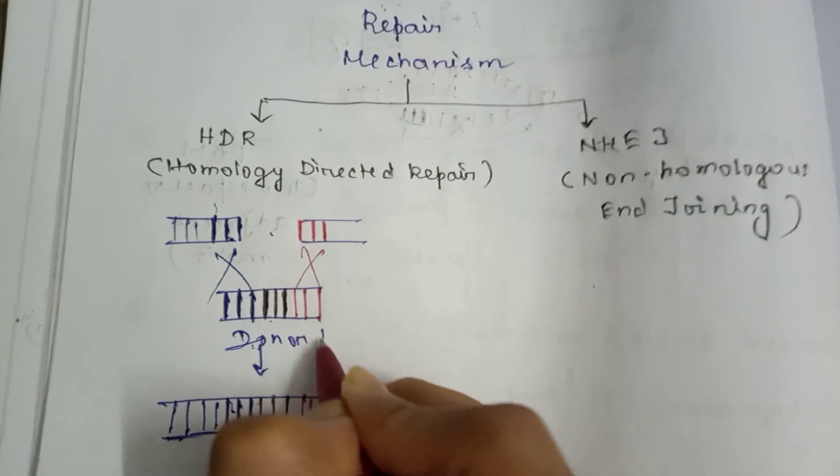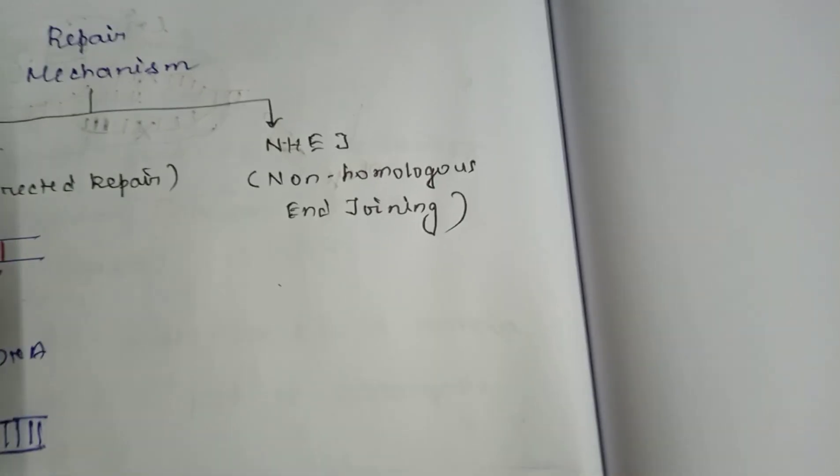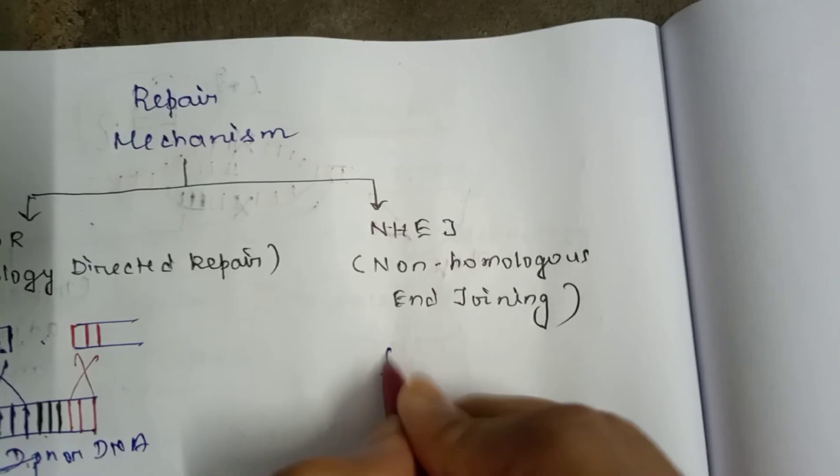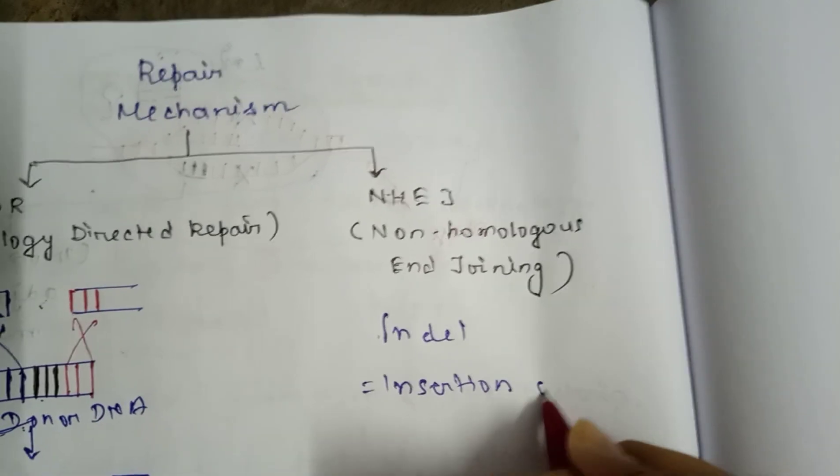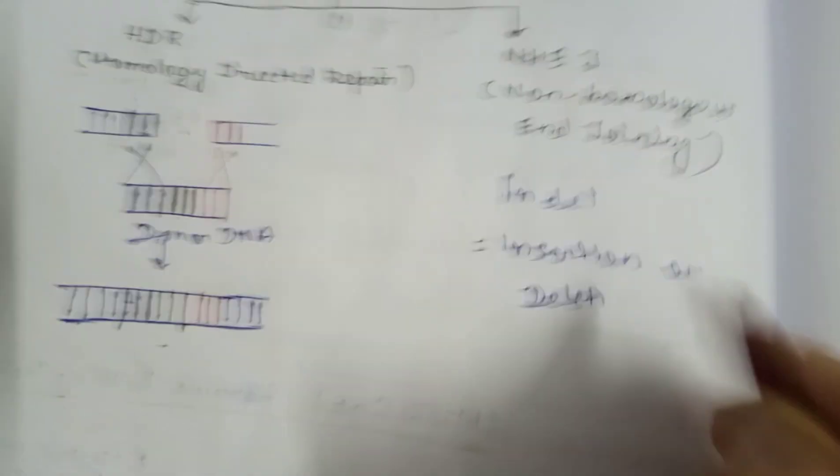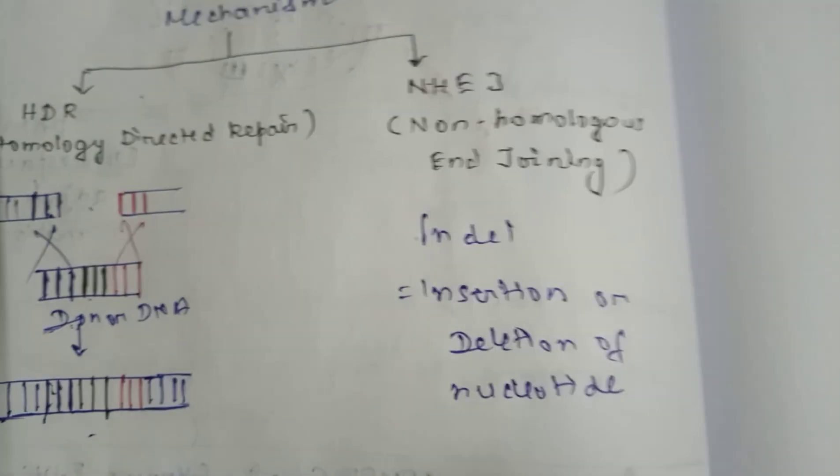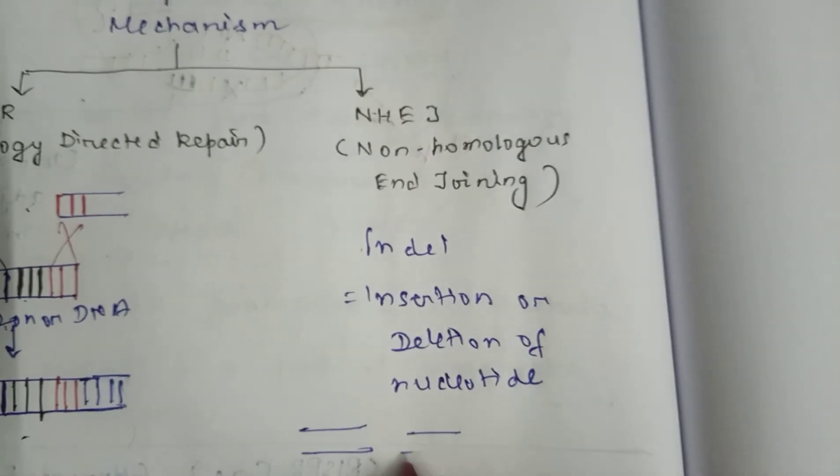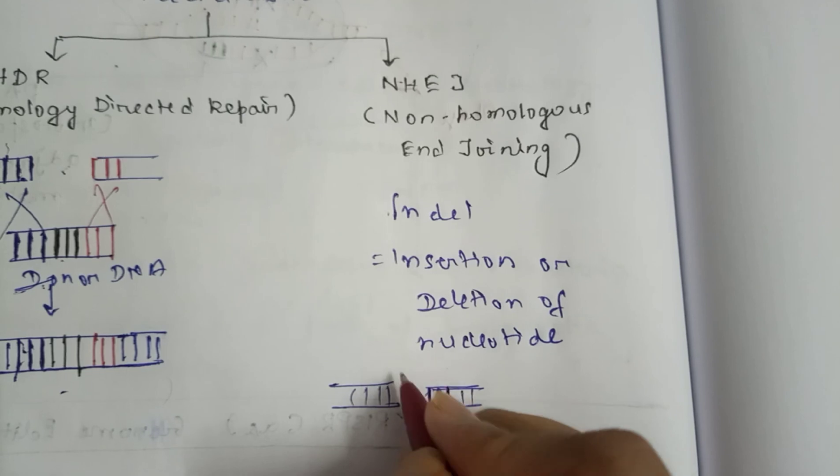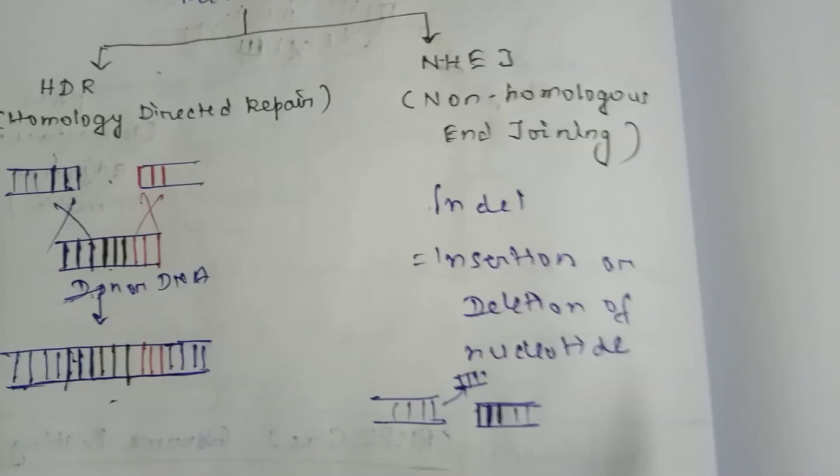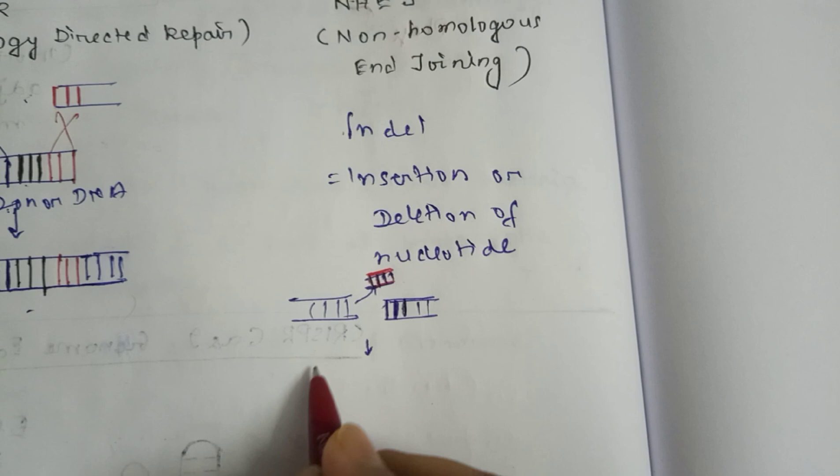Remember one thing: there must be one donor DNA or template DNA for homology directed repair. For non-homologous end joining, what is happening here? Indel will happen. Indel means either insertion or deletion of nucleotide. Sometimes something is deleted and then this is joined. This is deletion.